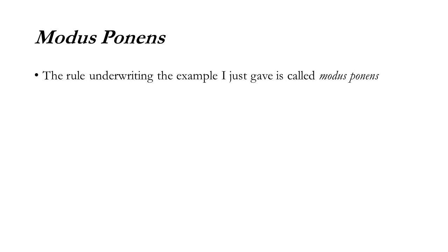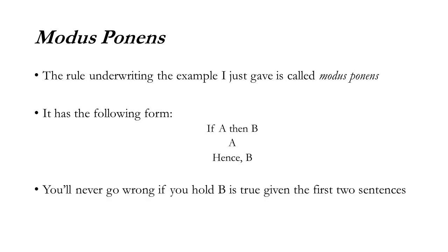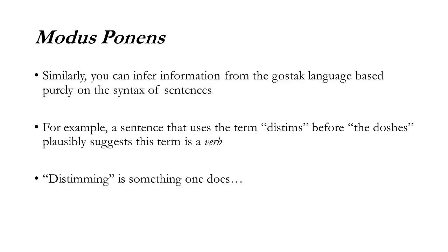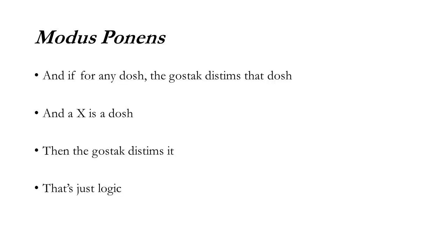Similarly, you can infer information from the Gostak language based purely on the syntax of sentences. For example, the sentence that uses the term 'distems' before 'the doshes' plausibly suggests this term is a verb — it is doing something, distemming is a thing done. And if for any dosh the Gostak distems that dosh, and x is a dosh, then the Gostak distems it — and that's just logic.